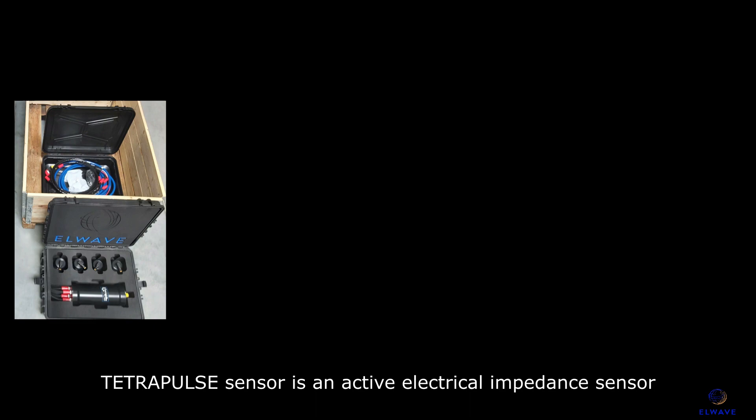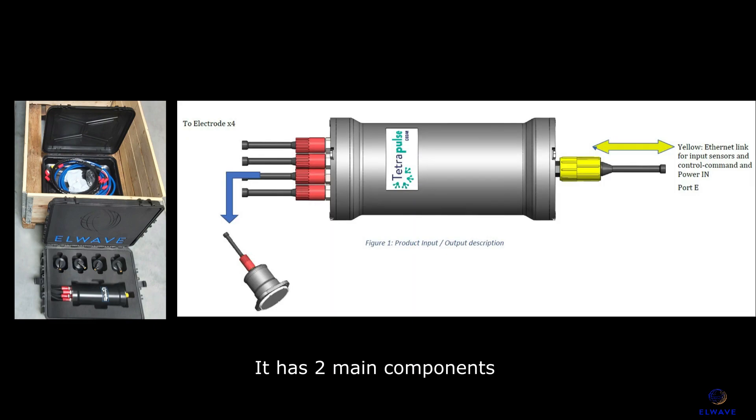Tetrapulse sensor is an active electrical impedance sensor. It has two main components: the pod, brain of the system, and the four electrodes, the sensitive part of the system.